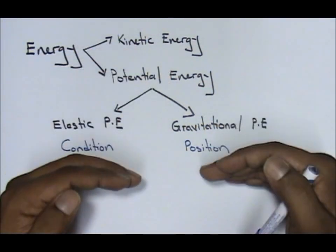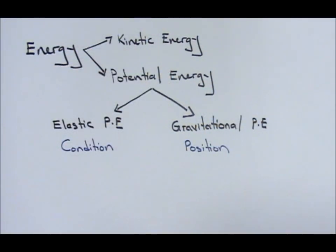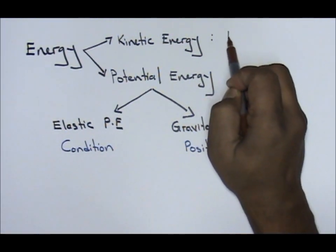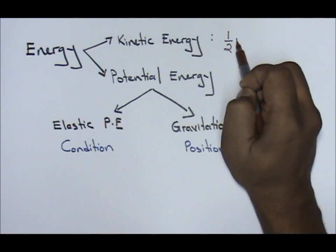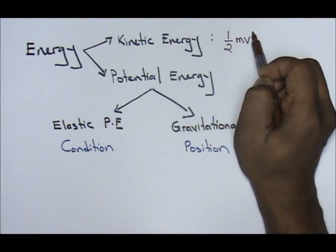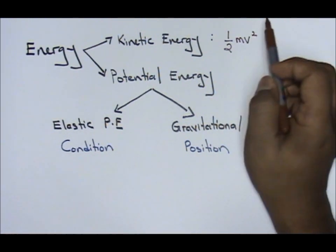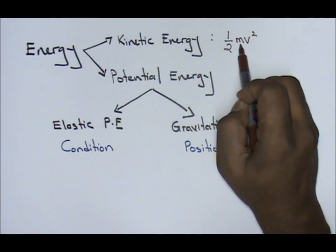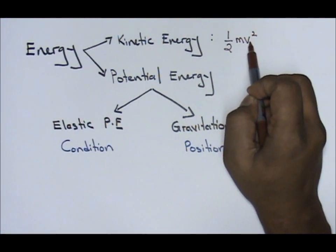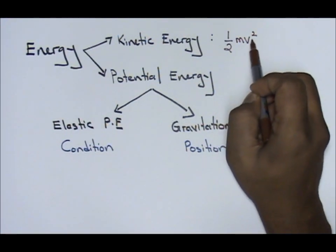Now, each and every one of them come with a set of formula. First, for kinetic energy, kinetic energy, 1 over 2 mv squared. M over here is mass, v here is velocity, mass and velocity.